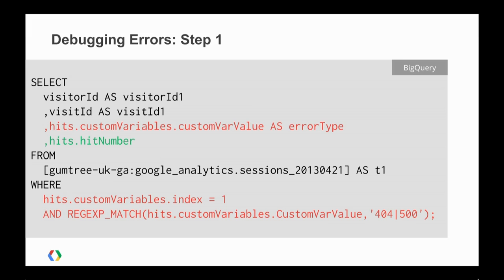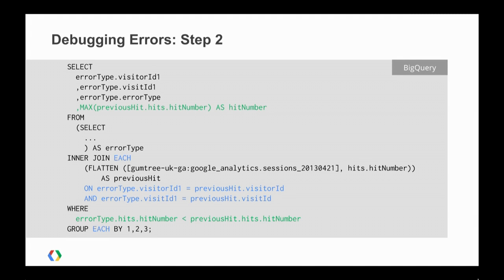In green, we're pulling out the hit number for where the error occurs, and the information about the session is in black. The next step is to do a self-join back on this data. In blue, you can see we're joining on the session data. We're using the word EACH here because this is a very big data set — we're talking millions of rows. We're also using FLATTEN because this analytics data is in a nested JSON format, and if we want to join on these repeated fields, we need to flatten that out into a virtual flat format.